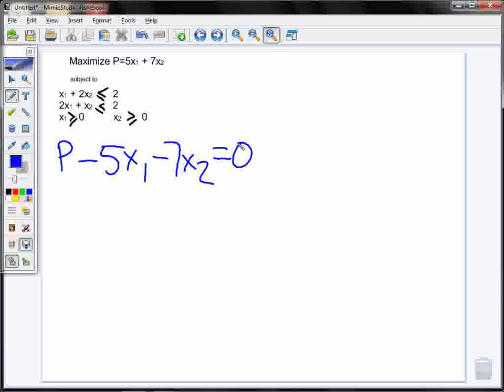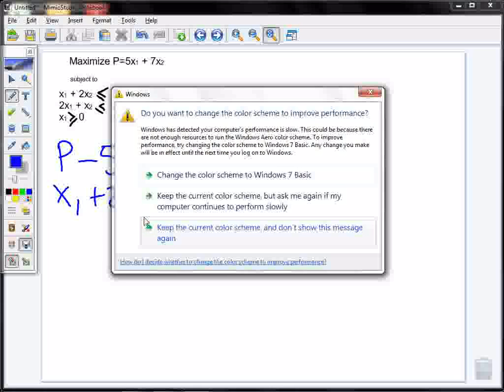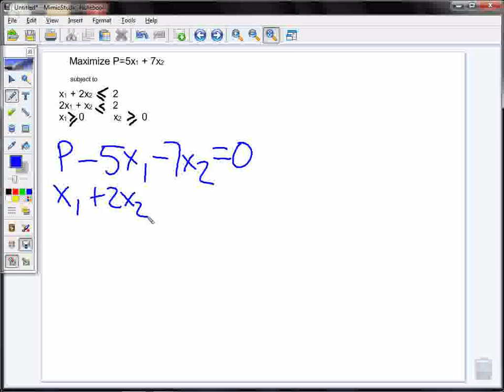Next, we know we talked about slack variables. So this is less than or equal to 2, which if it's less than, I want it to be equal to. So I need to add a slack variable. It's going to take up the slack. You see, we changed and we added the slack variable here so that we could have equals and not just less than or equal to.